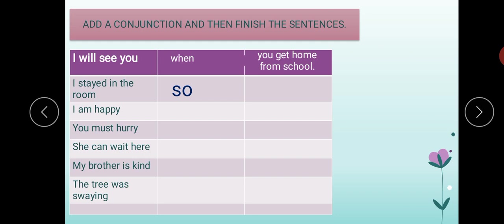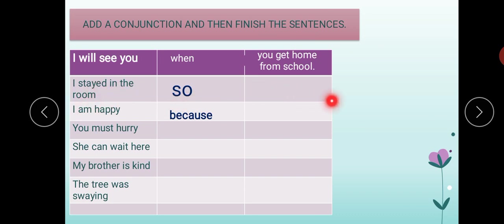The conjunctions provided are: so, because, or, till, and, due. The answers are creative — your answers will change and that is fine. Aapne apni marzi ka answer likhna hai book par. 'I stayed in room — so — I took rest.' Or any other suitable answer from your own mind. 'I am happy — because — I got first position' or 'it was my birthday' or 'I bought a new bag.' 'You must hurry — or — the bus will leave.' 'She can wait here — till — her mother comes.'